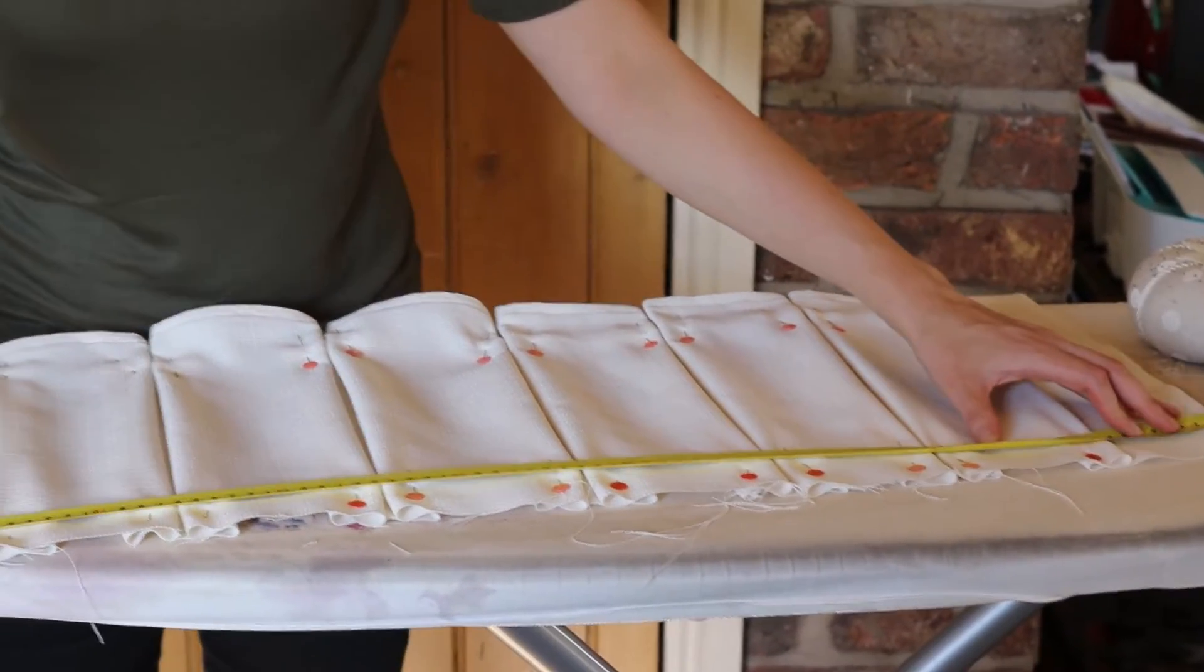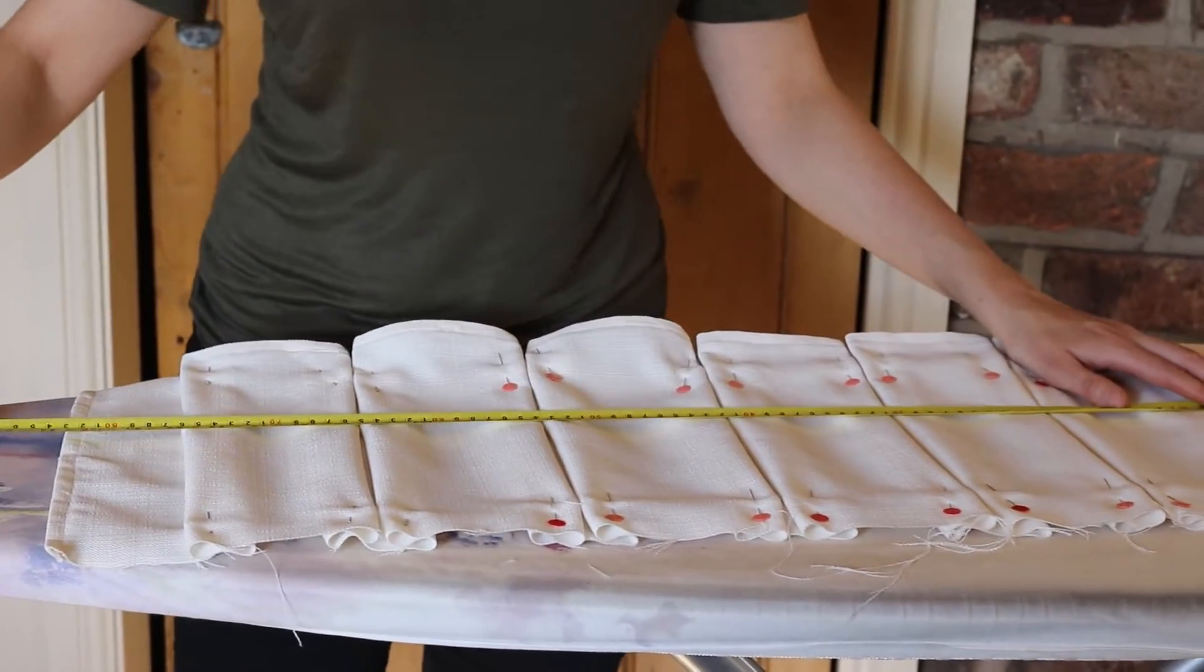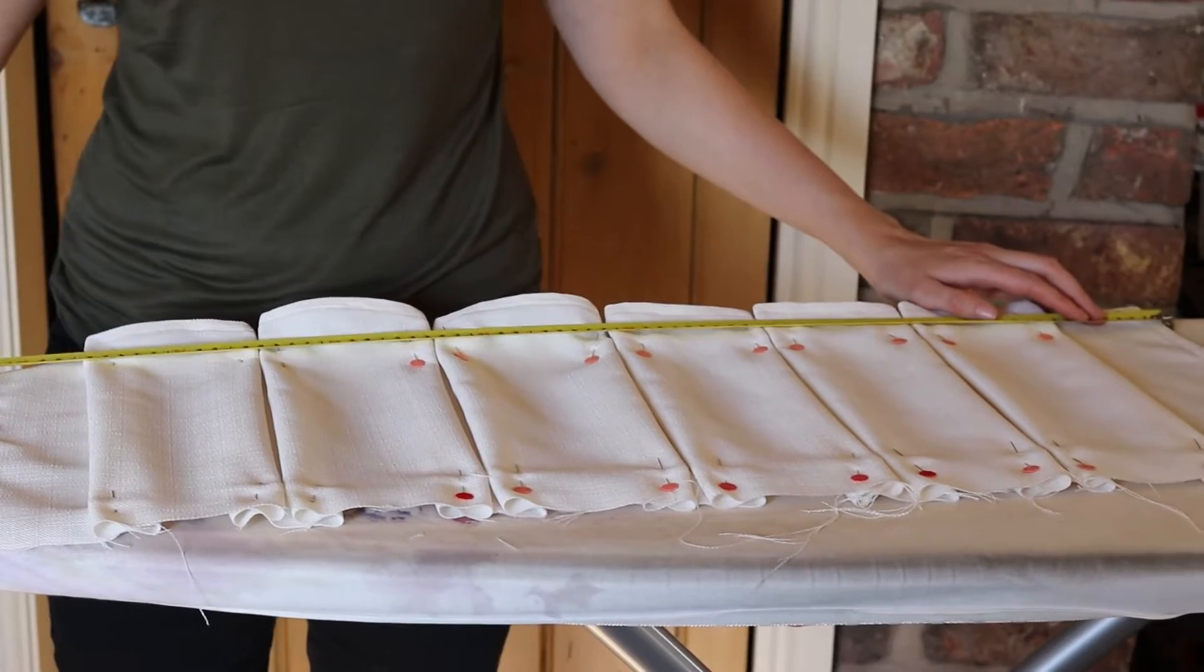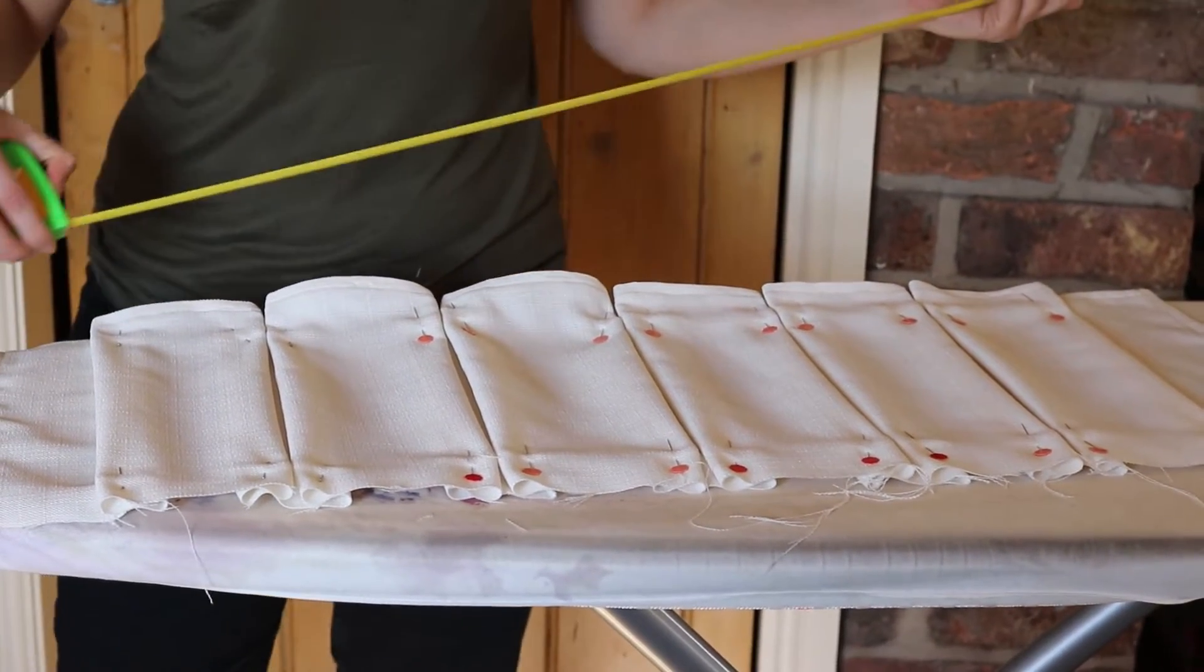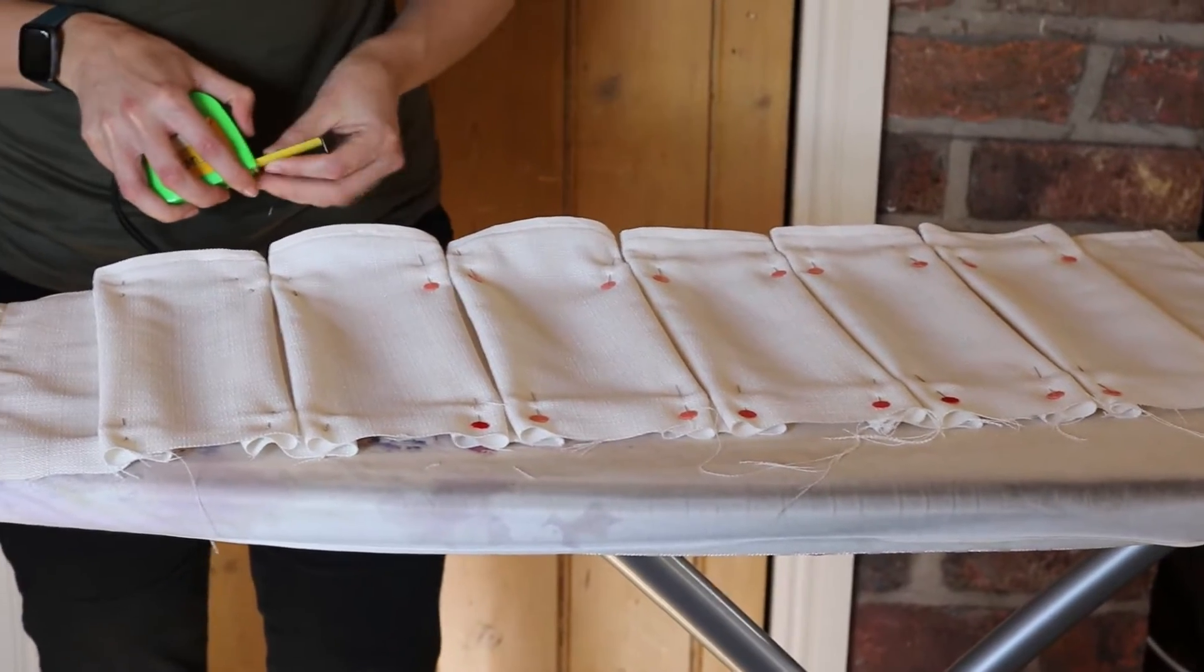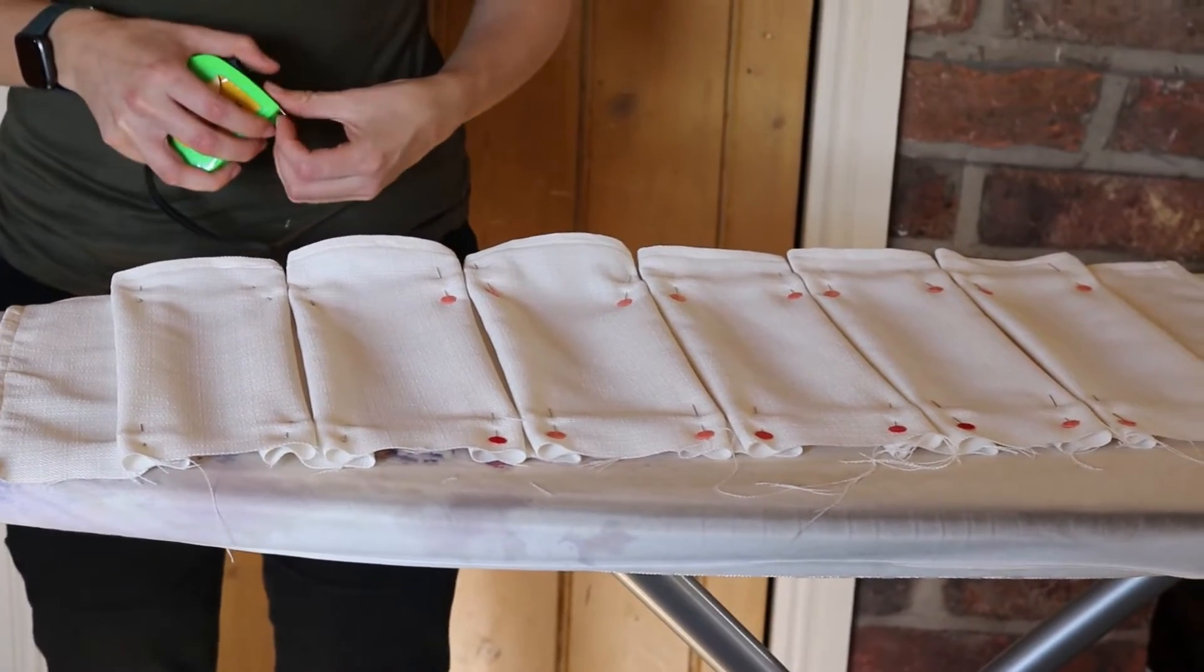Once you've completed all your pleats do a quick double check before you sew them up that the end to end distance is what you're expecting it to be. Don't forget that you need a bit of extra at the ends to allow your hooks to attach. So we allowed a centimeter at either end.